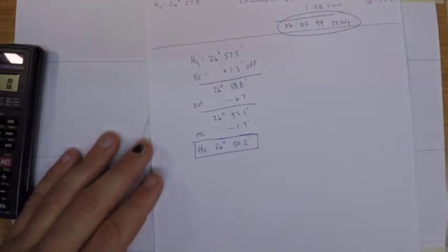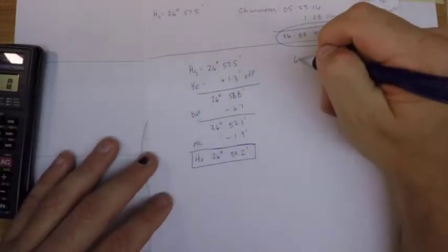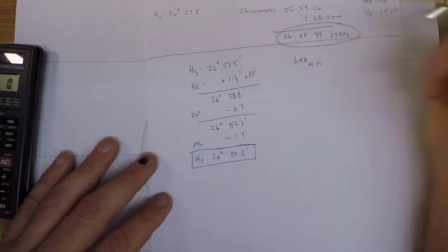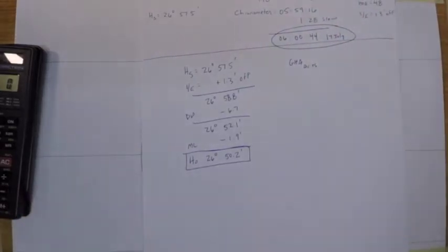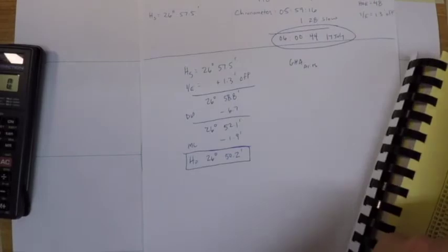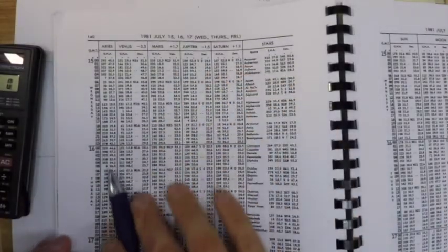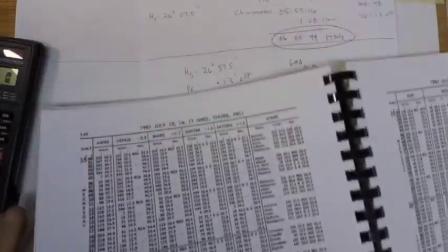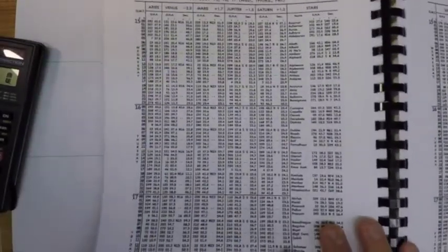The next thing we need to do is get the GHA of Aries so that we can use the Polaris tables in the back. For that I need to go to 16 July or 17 July I guess. So on the 17th of July at a time of 0600 I'll pull out the GHA of Aries.